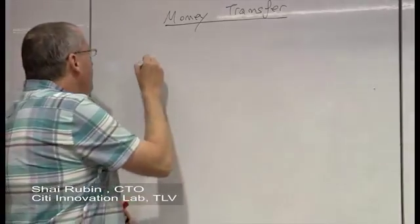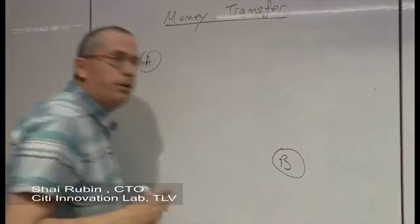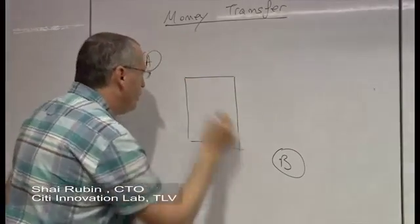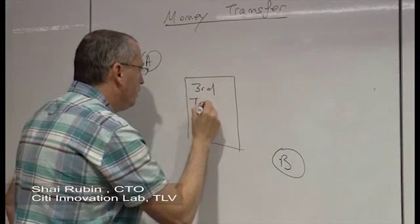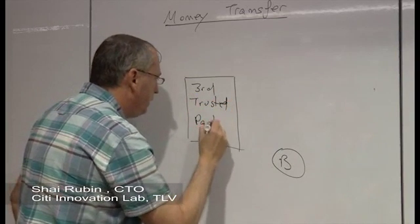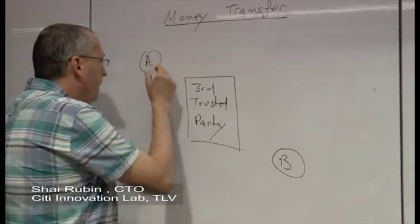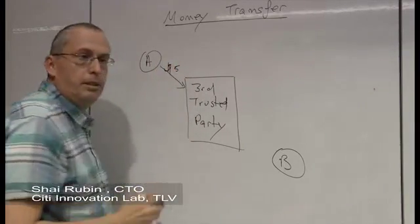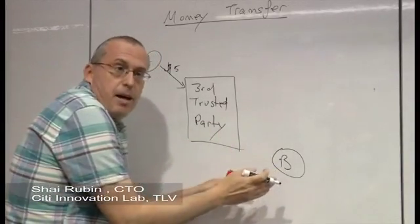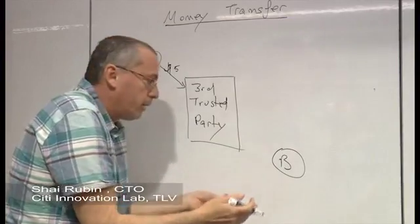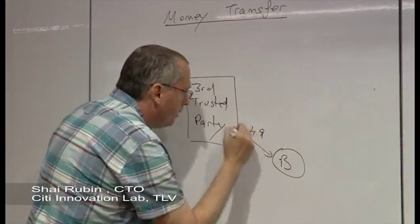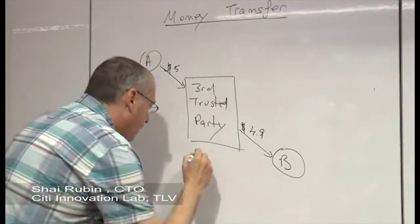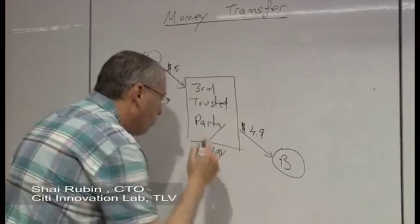So today, if a person A wants to transfer money to a person B, let's say from Israel to Japan, this is typically done using a third trusted party. First, A orders the third party to transfer money to B. The trusted party identifies B in Japan, identifies the person and bank account, and then moves the money after taking some fee to the right account in Japan. This typically takes about three days or more.